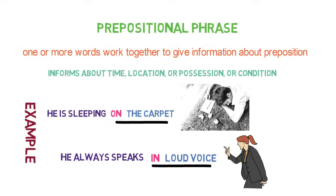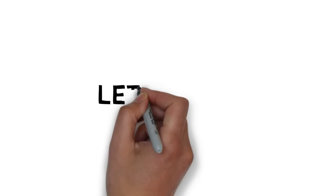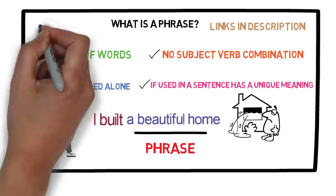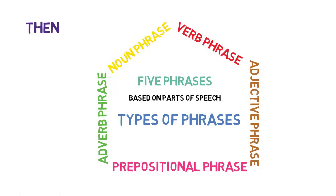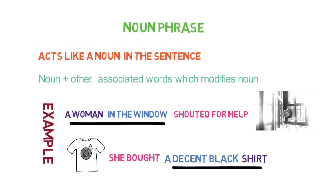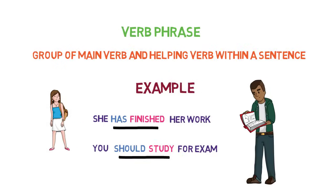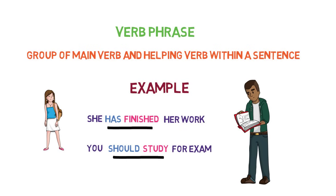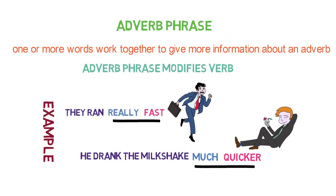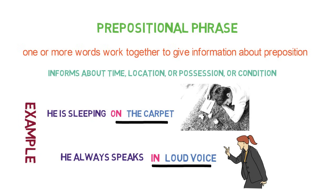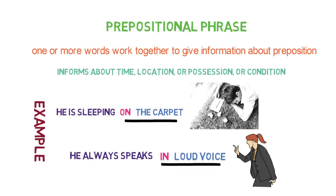Now we have discussed all the main types of phrases. Let's quickly revise what we have learned in this lesson. Firstly, we described what phrases exactly are and four important points about phrases. Then we discussed five types of phrases and went through each one with examples. We understood that noun phrase acts as a noun, verb phrase acts as a verb, adjective phrase acts like an adjective, adverb phrase acts like an adverb, and prepositional phrase acts as a preposition. That's all in this video.